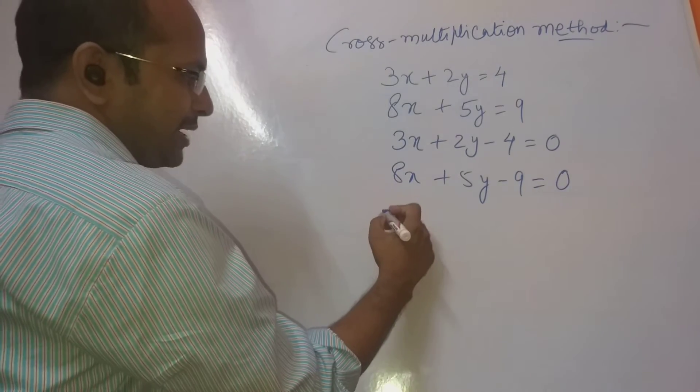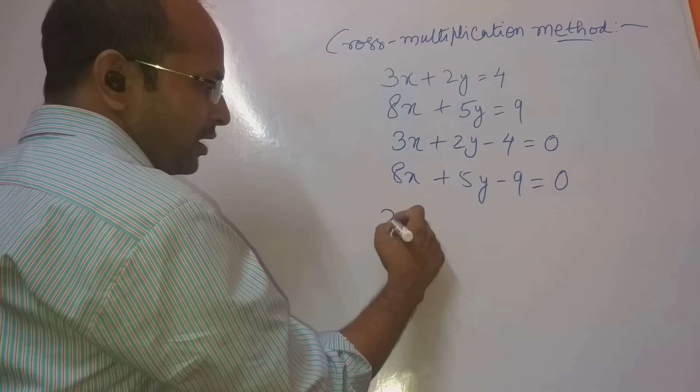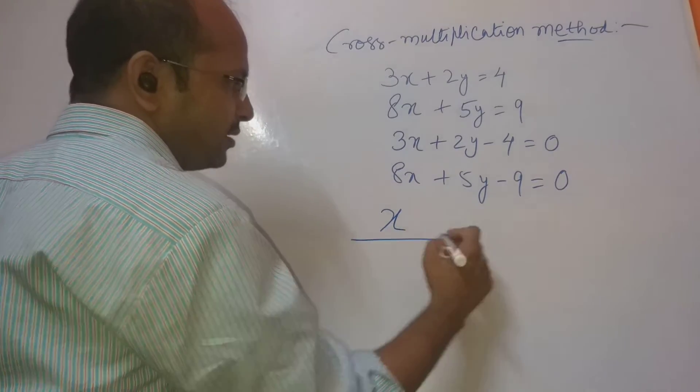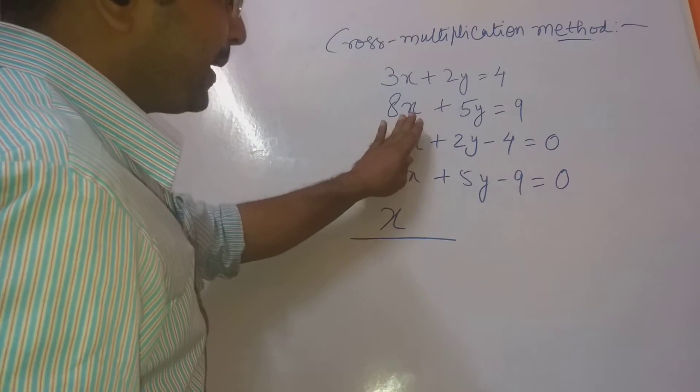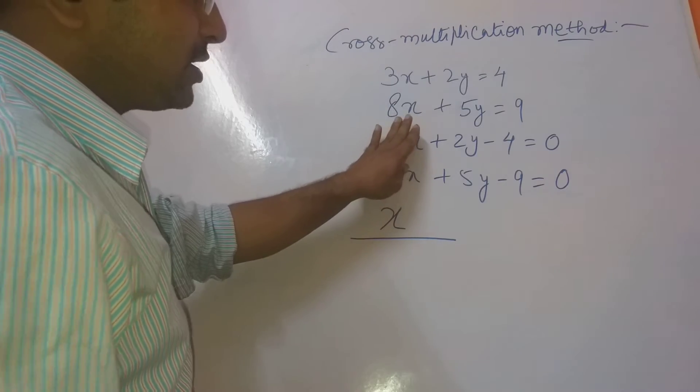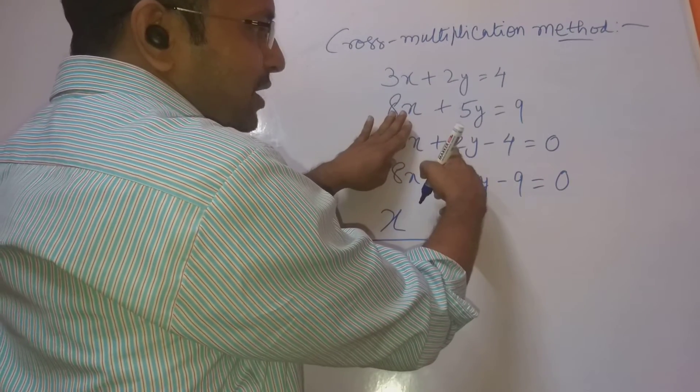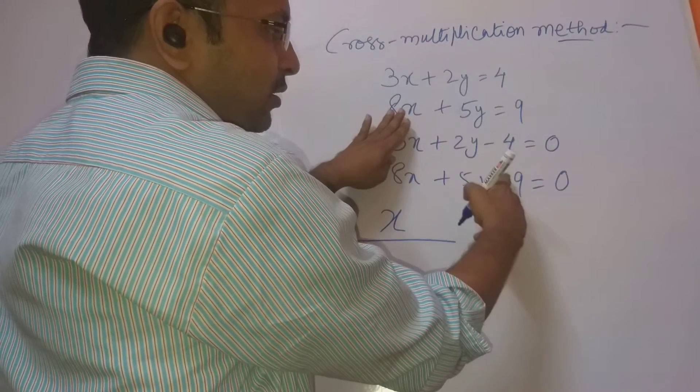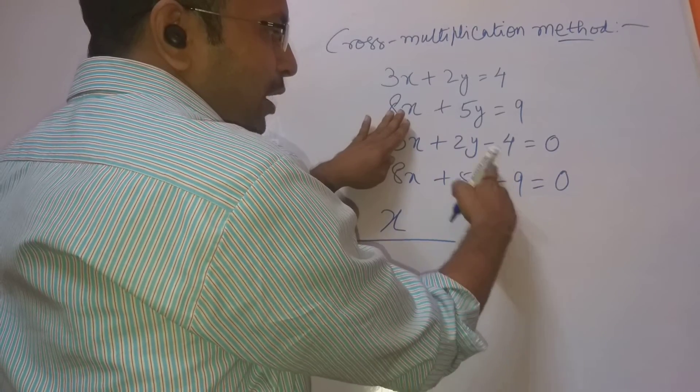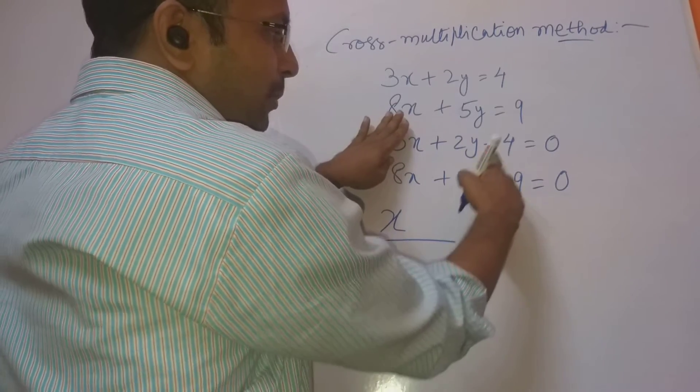Then what we have to write? We have to write like this. First, x by... When you write x by, close this and multiply the coefficient with 9. 2 into 9. We have to go like this, this minus this.